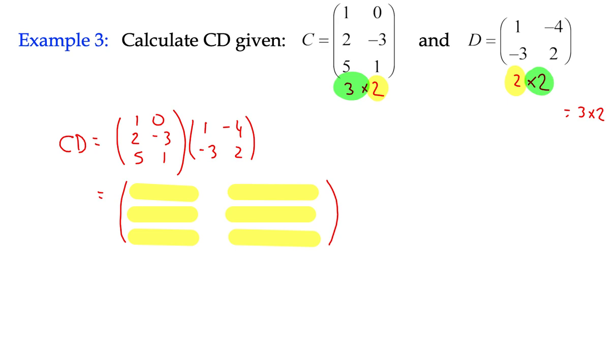To get the first one, I am going to multiply the first row by the first column and that's going to give me the first row first column element in my new matrix. So that's going to be 1 times 1 plus 0 times negative 3.